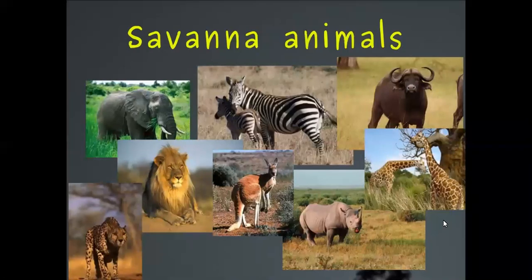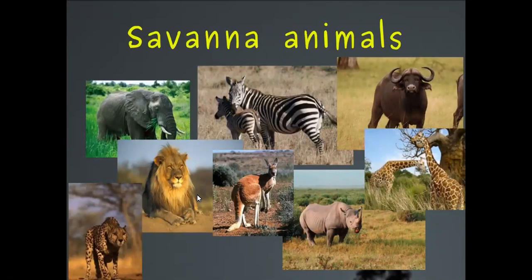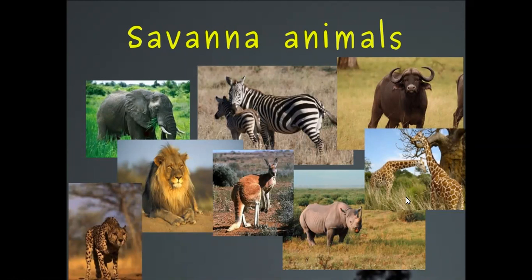Here are more savanna animals: lions, cheetahs, kangaroos, rhinos, elephants, zebras, wildebeest — if you watched Lion King, these are the ones that killed Mufasa — and giraffes. These are the typical animals everybody knows from the savanna.